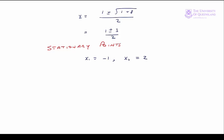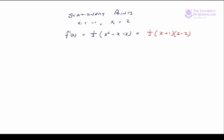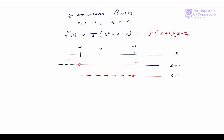We use a sign diagram to see how the first derivative changes around those stationary points. Since we know the roots of the quadratic, we can factorize the first derivative. The coefficient of x² — which is 1/3 — is always positive, so we focus on the two factors. From minus infinity to −1, the first derivative is positive. From −1 to +2, F'(x) is negative. And from +2 to plus infinity, the first derivative is positive again.